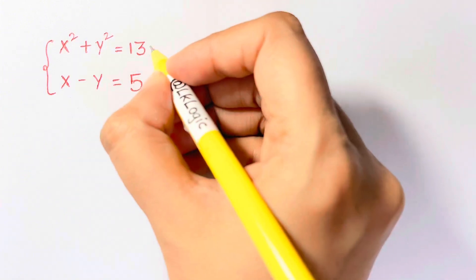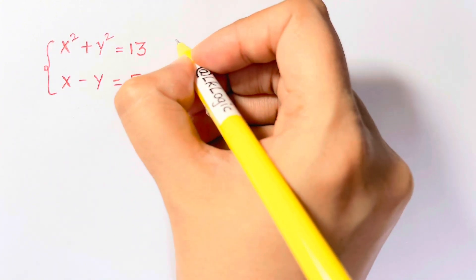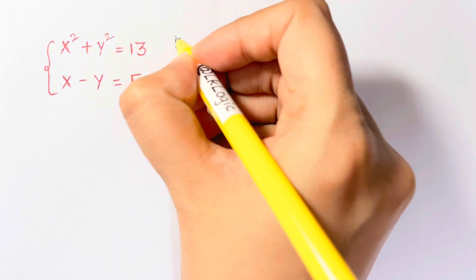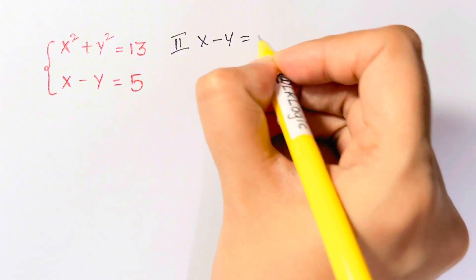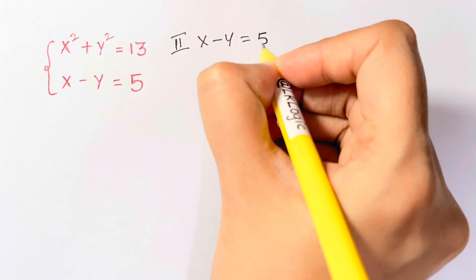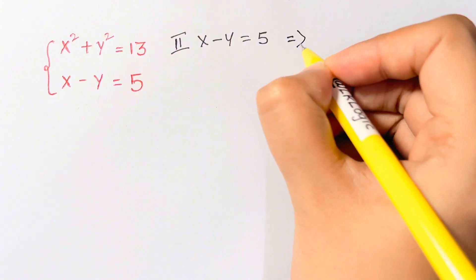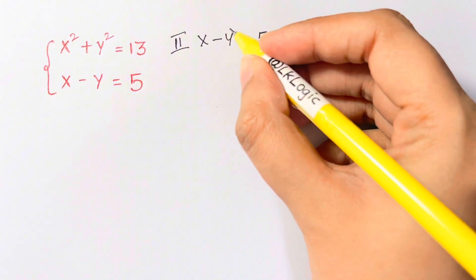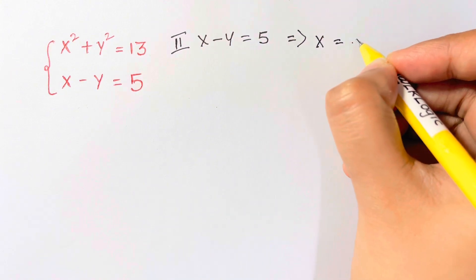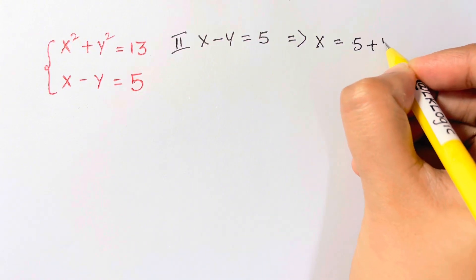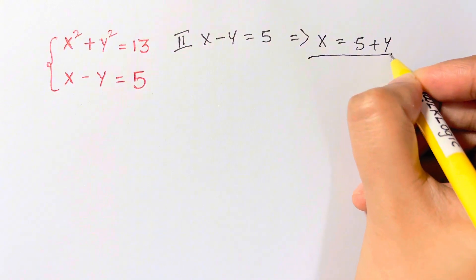So first of all, let this be equation 1 and this be equation 2. So from equation 2, x minus y is equal to 5. So from here, what I'm going to do is just send y to the other side. So x is equal to 5 plus y. Now this has to be noted down.